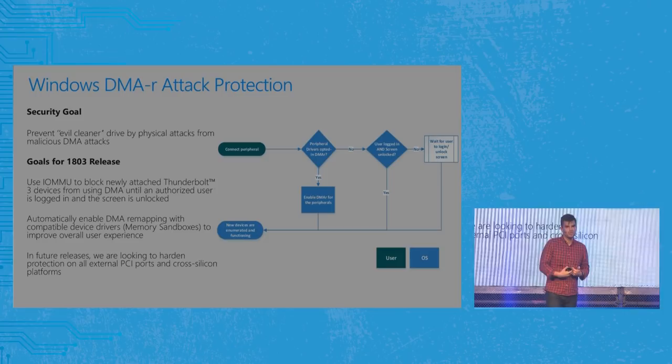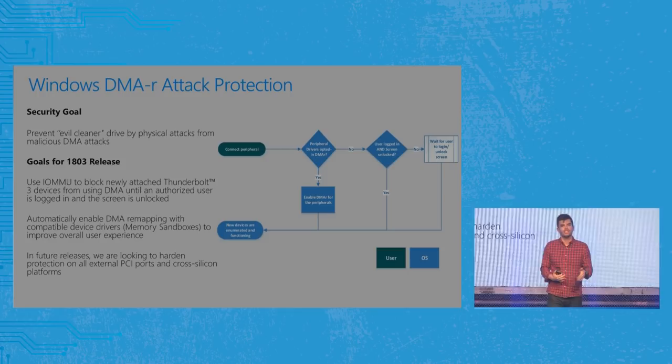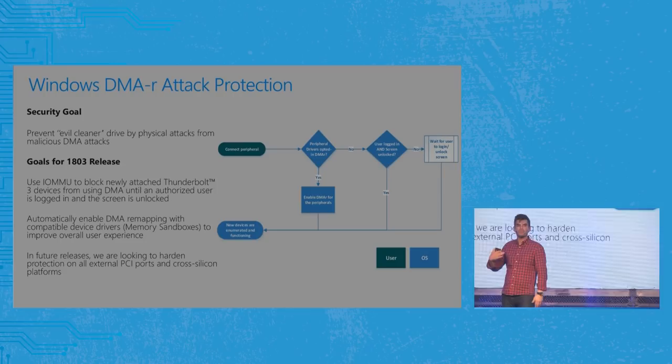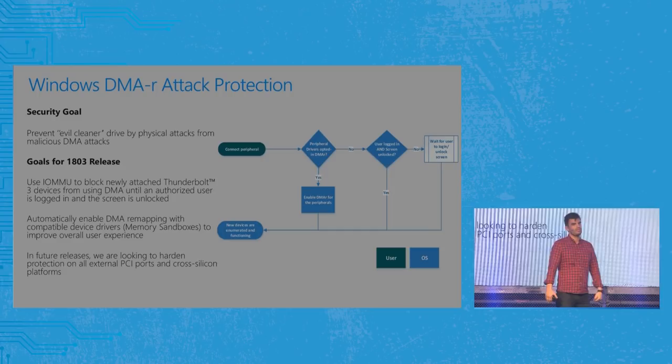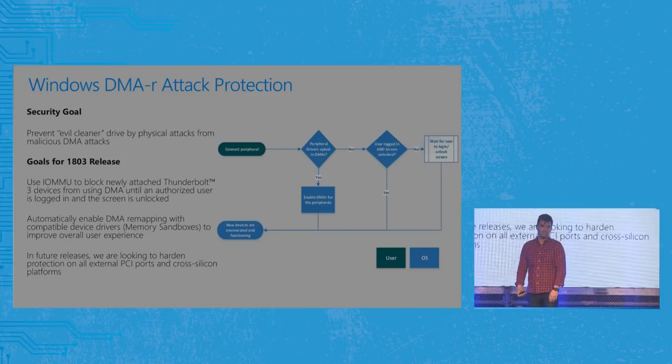What that means is I can't just walk up to your machine and plug in a PCIe or Thunderbolt port and start snarfing things off the machine — the user has to authorize it. It will probably take multiple release cycles to get all driver vendors up to speed, but with our 1803 release in March you'll see us marching towards the goal of saying casual physical access is no longer a death sentence for a Windows machine. We're starting with Thunderbolt, which is arguably the most common vector.